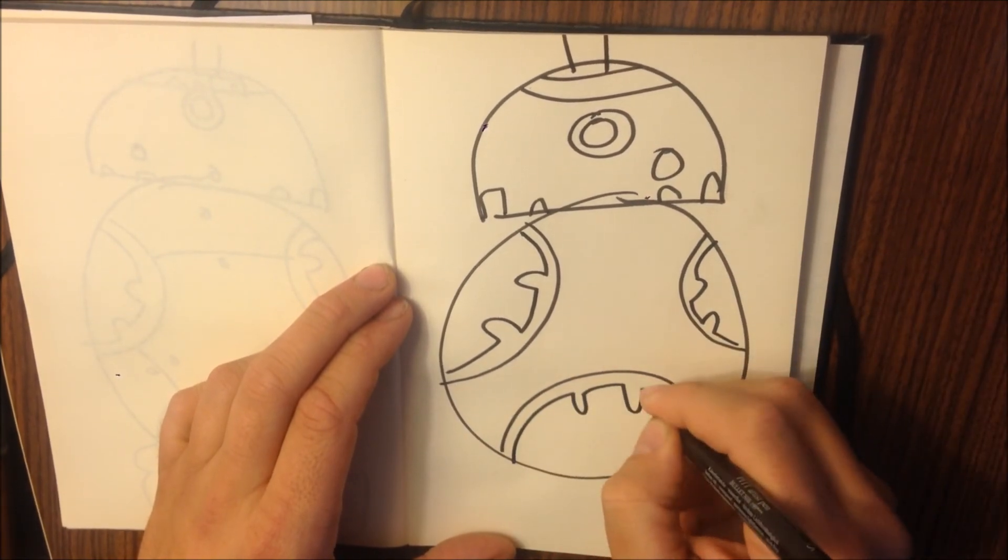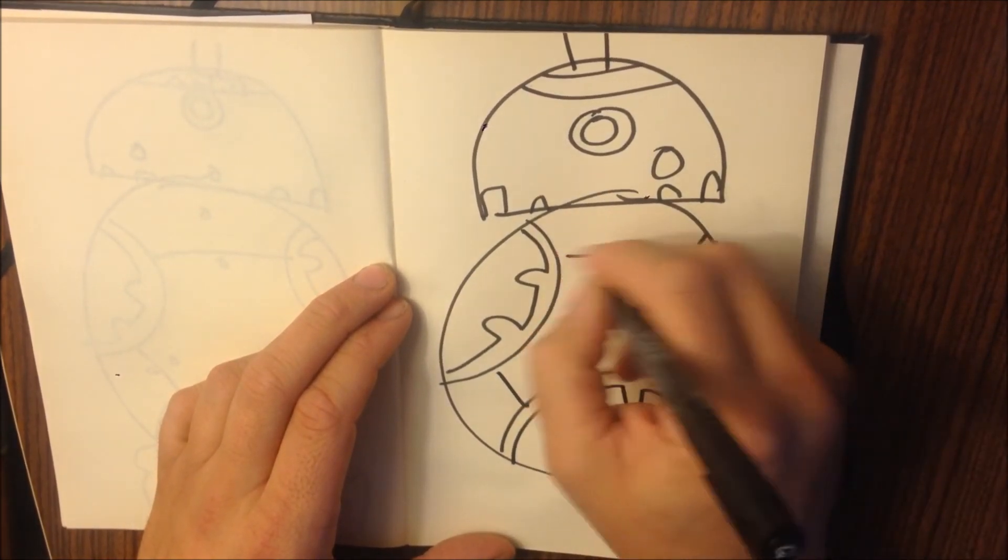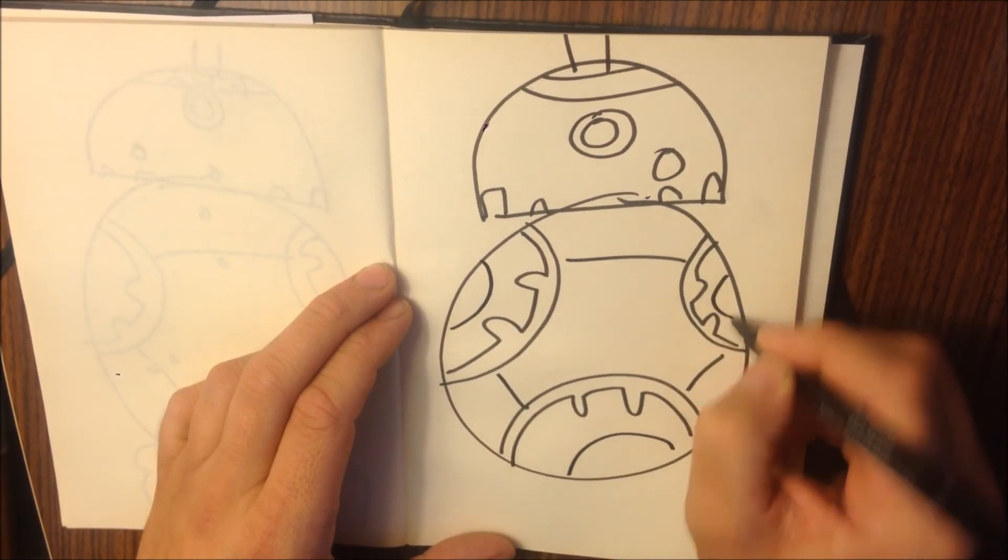Circle with some bits on. Lines, lines, lines. Little more circle there.